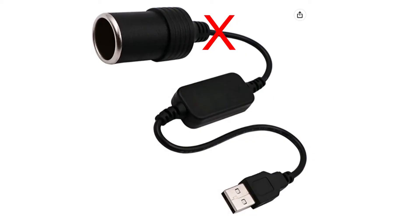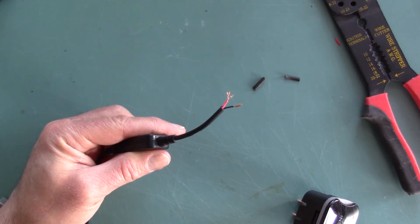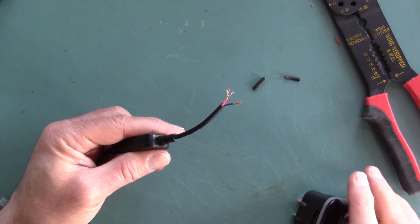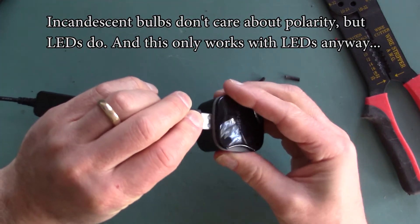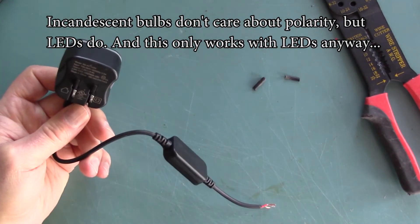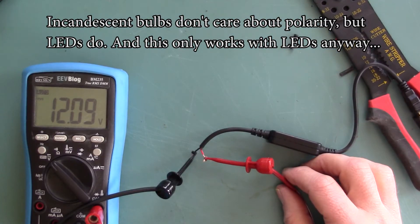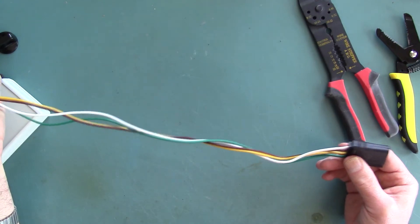Start by cutting off the cigarette lighter socket and stripping the wires. There's a red wire and a black wire. Odds are the red wire is positive and the black wire is negative, but I'm going to double check by plugging the USB into an AC adapter and checking the wires with a multimeter. And indeed, the multimeter says that with the black negative and the red positive, it's 12 volts. So we know what polarity to wire up. Next, I'm going to cut the wires on this harness and strip them.